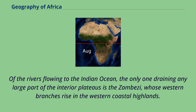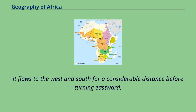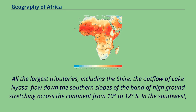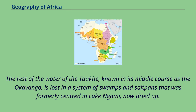Of the rivers flowing to the Indian Ocean, the only one draining any large part of the interior plateaus is the Zambezi, whose western branches rise in the western coastal highlands. The main stream has its rise at 11 degrees 21 S, 24 degrees 22 E, at an elevation of 1,500 meters. It flows to the west and south for a considerable distance before turning eastward. All the largest tributaries, including the Shire, the outflow of Lake Nyasa, flow down the southern slopes of the band of high ground stretching across the continent from 10 to 12 degrees south. In the southwest, the Zambezi system interlaces with that of the Cuando, and the remainder of the Cuando's waters, known as the Okavango, is lost in a system of swamps and salt pans formerly centered in Lake Ngami, now dried up.